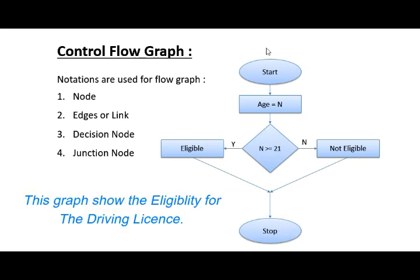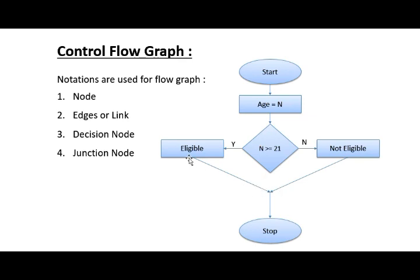We will start the program at the initial node and stop the program at the last node. This is the decision box where the conditions are set for the program. And this is the junction node, where more than two edges are joined together.